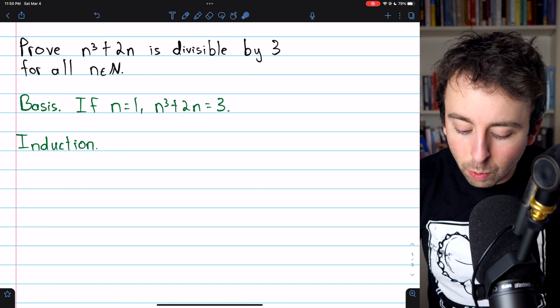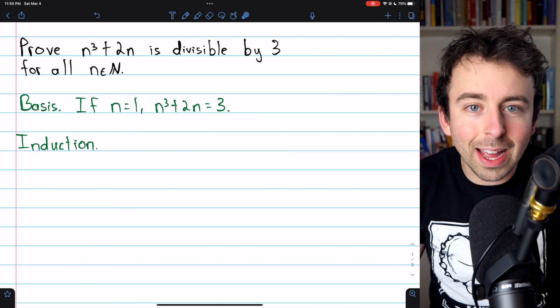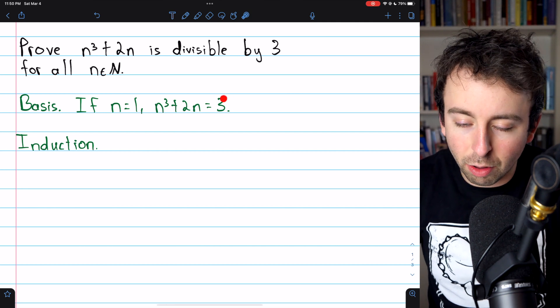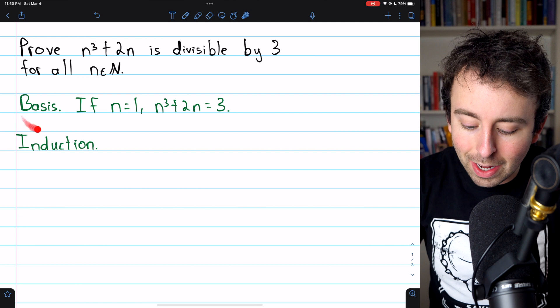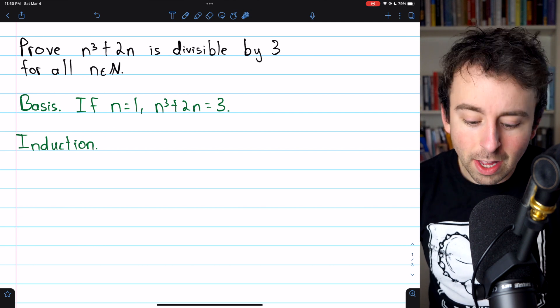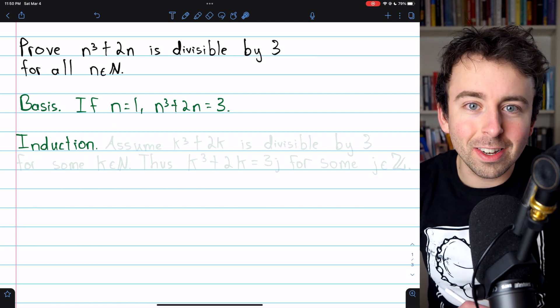Now for n equals 1, n cubed plus 2n is just 1 plus 2, which is 3, which is obviously divisible by 3. As usual, the basis step here turns out to be trivial, and we can move on to the induction step.